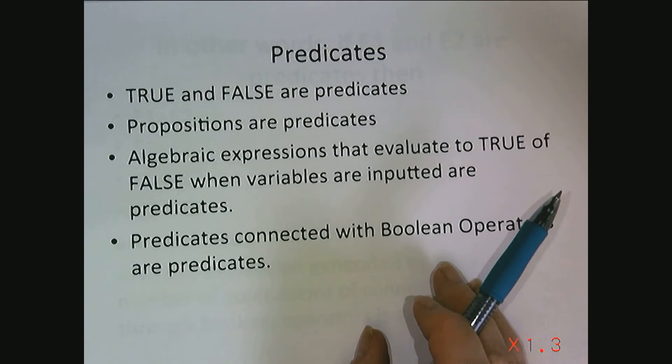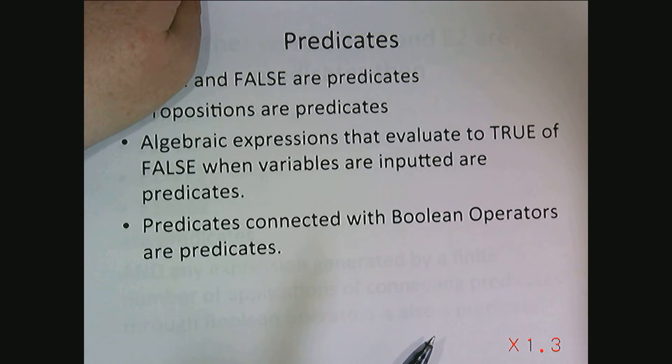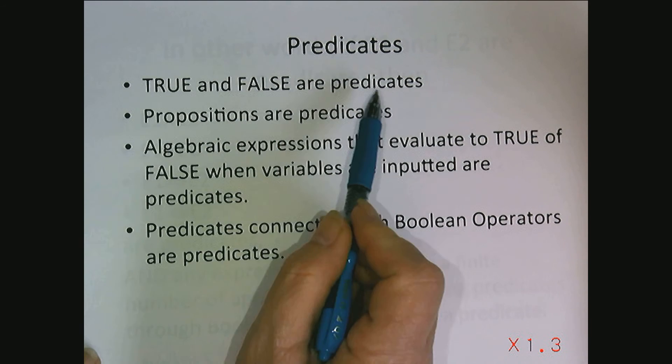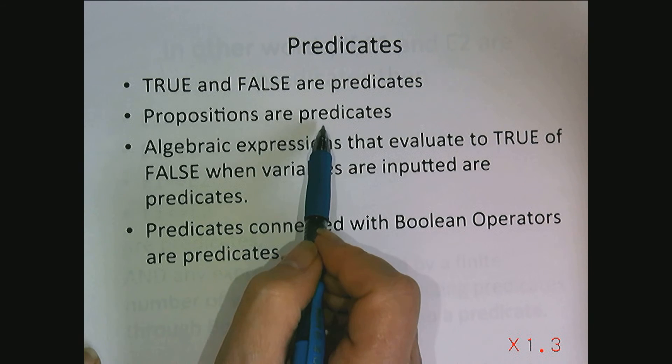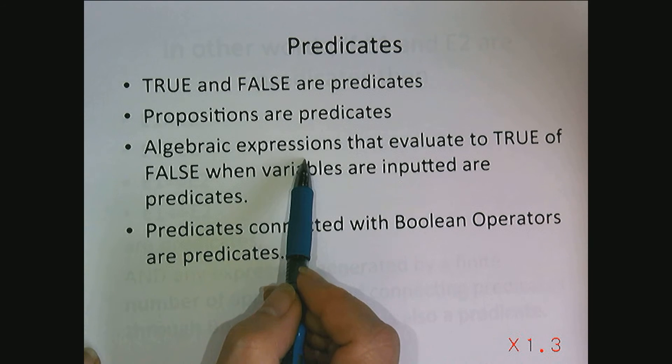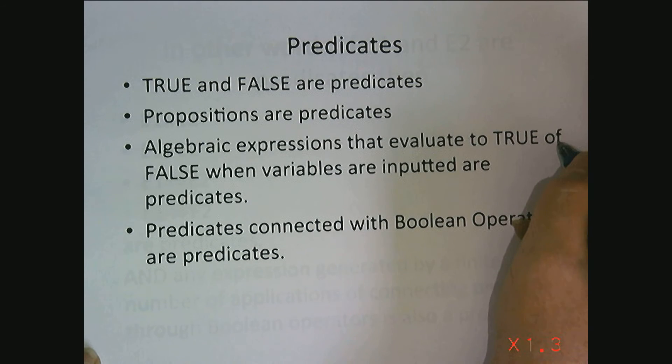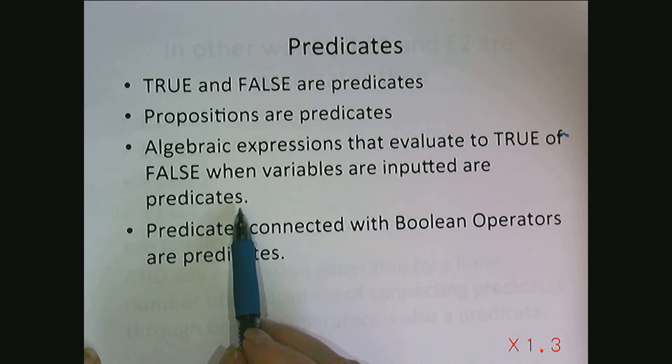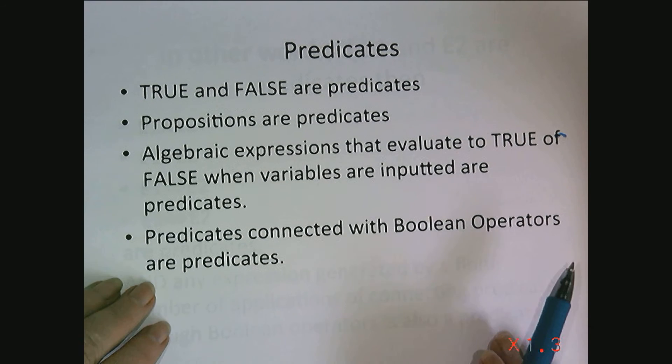Now, predicates could be constants, they may not have variables involved. True and false are predicates. Propositions are also predicates. Algebraic expressions that evaluate to true or false depending on the inputted variables are predicates. And actually predicates connected with Boolean operators are also predicates.